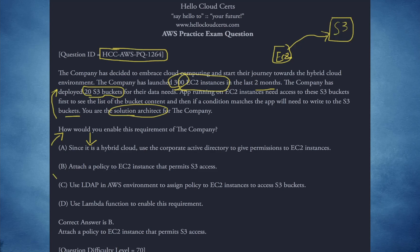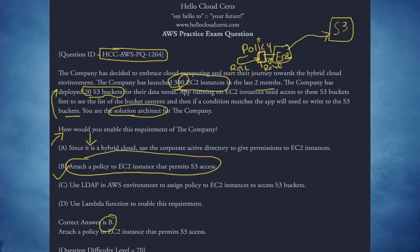The answer is B: attach a policy to the EC2 instance that permits S3 access. You do that by attaching a policy document through a role. You can attach a policy via a role to the EC2 instance. This is a policy — you make a role out of it and that role gets attached to the EC2 instance. That EC2 instance now has the permission to talk to S3. Attach a policy to the EC2 instance that permits S3 access — that is what is required.